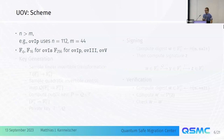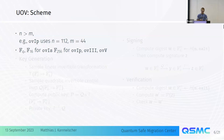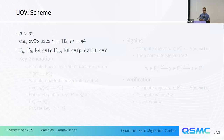To instantiate Oil and Vinegar, you need to pick some parameters. N is the number of variables — for one parameter set, N is 112. M is the number of equations — M is 44. Then we pick a finite field; we use either F16 or F256 for our parameter sets. These characteristic-two fields give very good performance on many platforms.